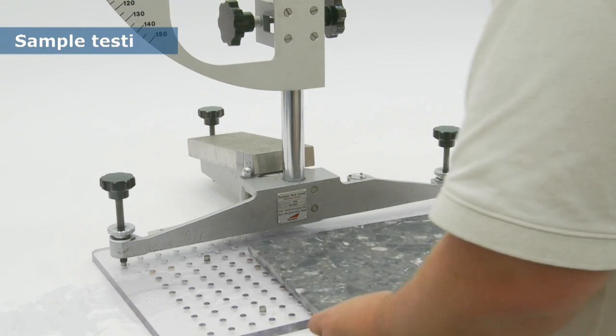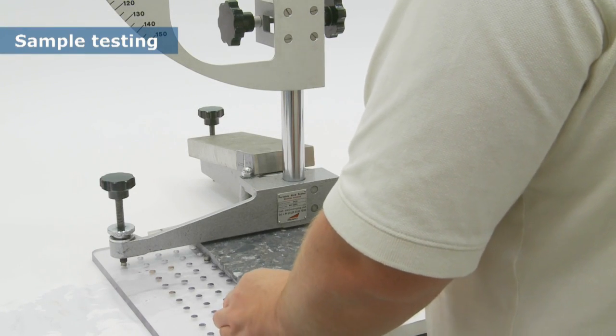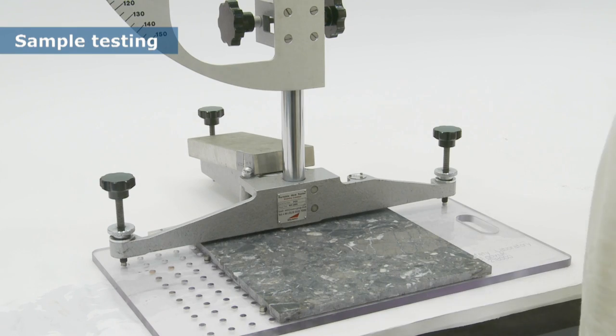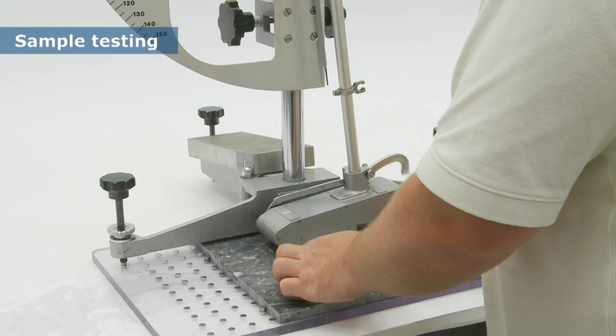You are now ready to test the flooring material, in this case a polished stone tile. Begin by setting the footprint on the surface of the sample.